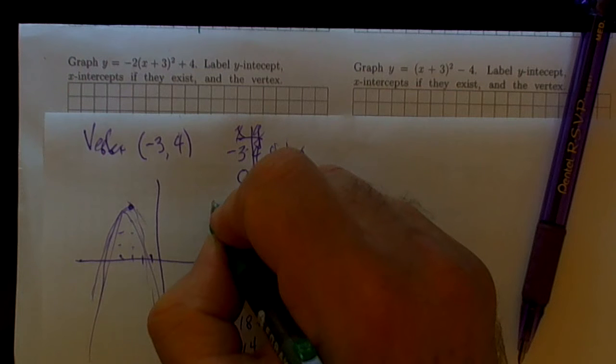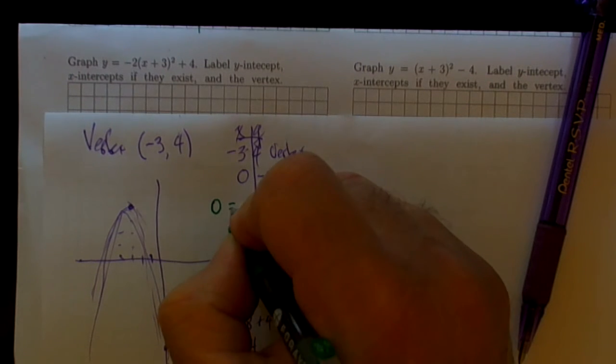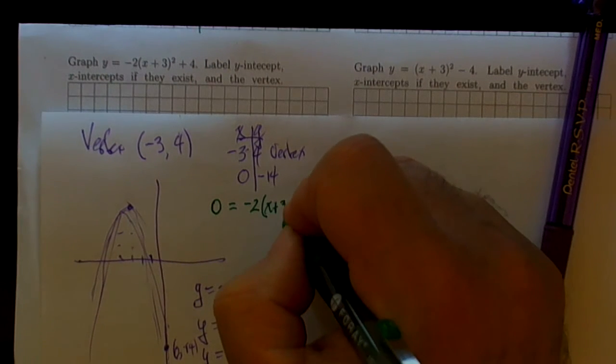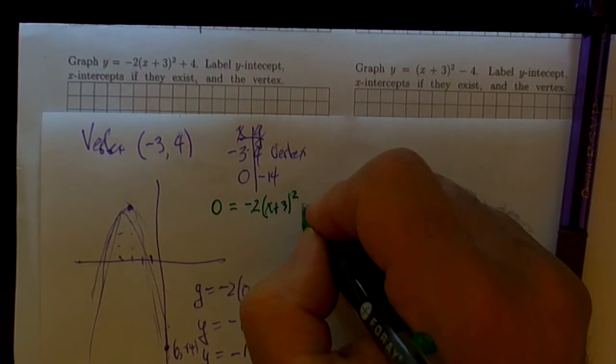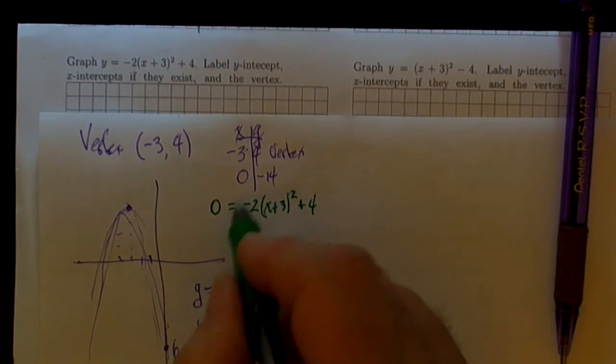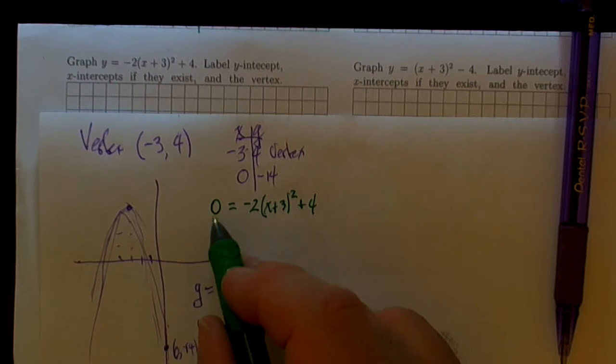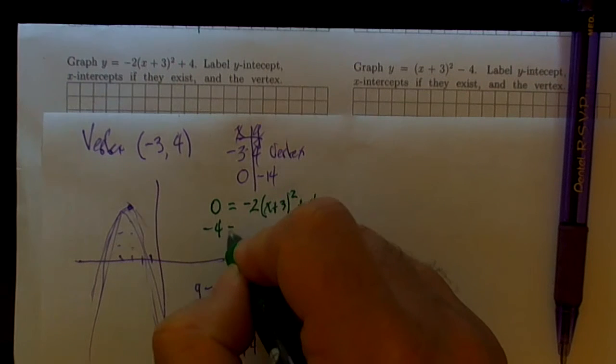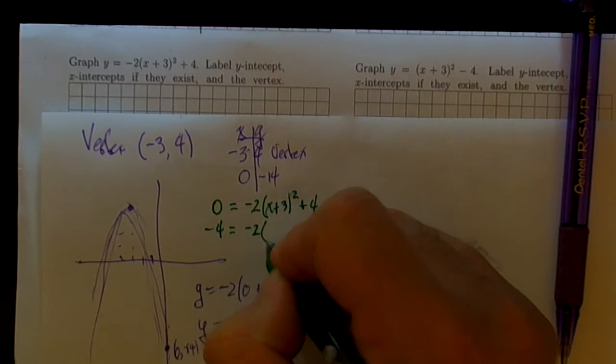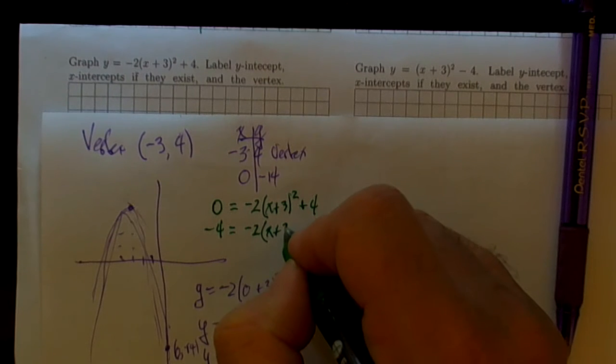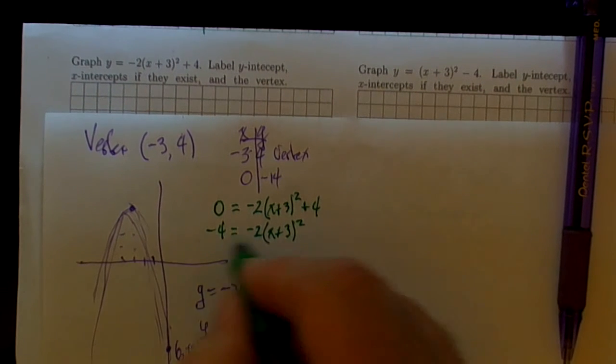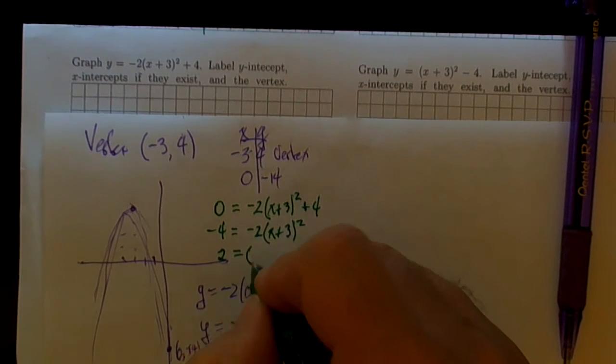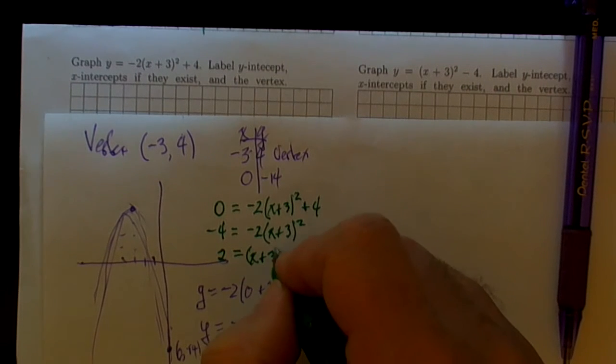We're looking for x-intercepts, so we're looking for when y is 0. We've got this particular situation: minus 2 times x plus 3 squared plus 4, and we're trying to find the x's that make that true. We can solve that just by subtracting 4 from both sides of the equation. Minus 4 is equal to minus 2. This is really a nice way of solving this when it's in vertex form.